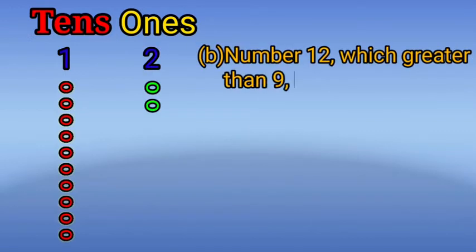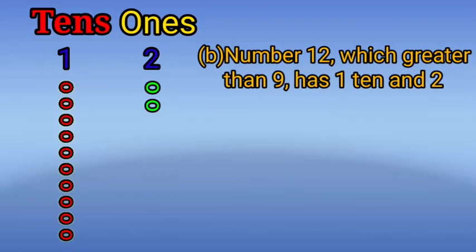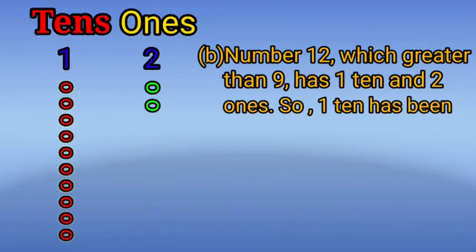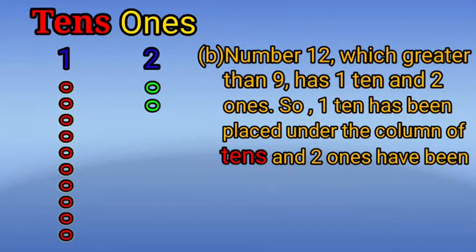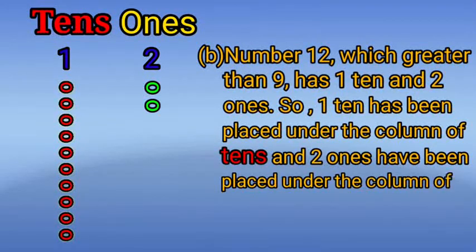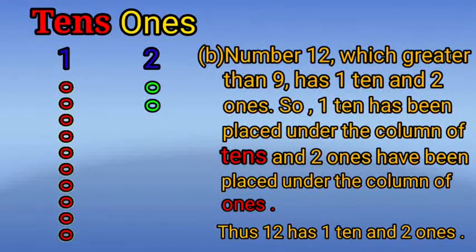Number twelve, which is greater than nine, has one ten and two ones. So one ten has been placed under the column of tens, and two ones have been placed under the column of ones. Thus, twelve has one ten and two ones.